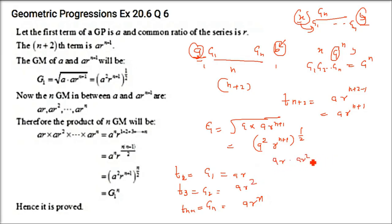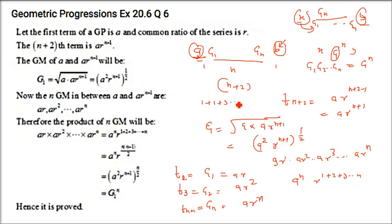Multiplying ar × ar² × ar³ × … × ar^n: the a terms appear n times giving a^n, and the r terms have exponents 1+2+3+…+n. Using the AP sum formula, this sum equals n(n+1)/2. So the product equals a^n · r^(n(n+1)/2).